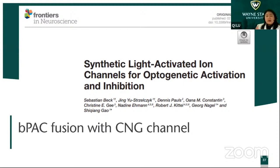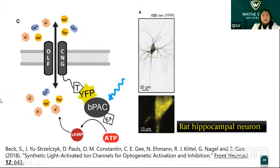The last article I find very interesting is this photoactive adenylyl cyclase fused with CNG channels. The general idea is that it's linked with YFP and this BPAC, and it can convert ATP to cyclic AMP. Cyclic AMP can then open these CNG channels and change cell permeability to calcium and sodium.